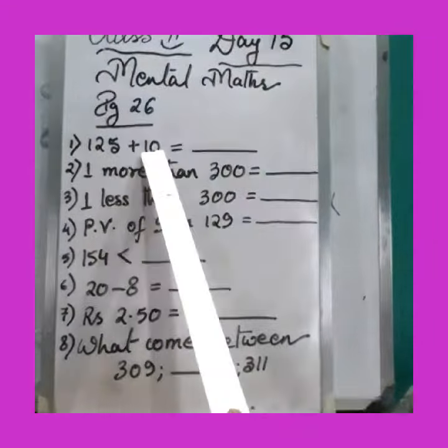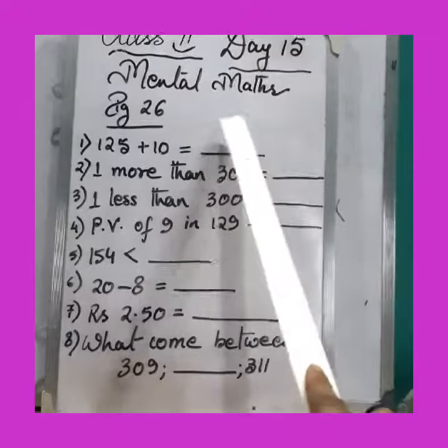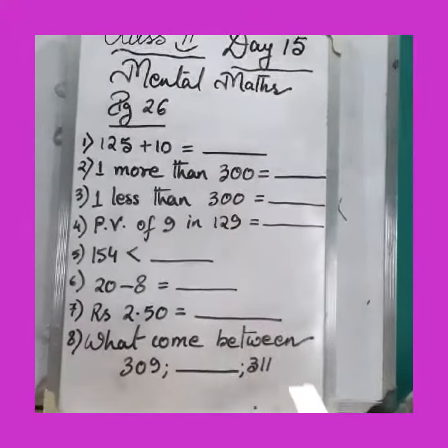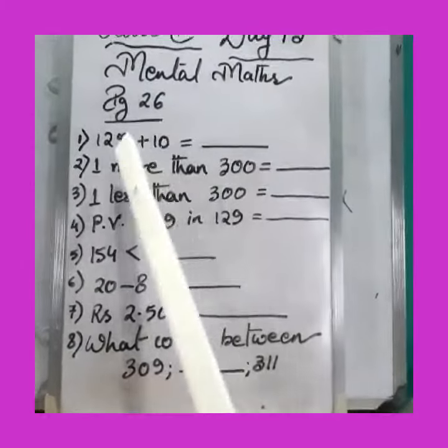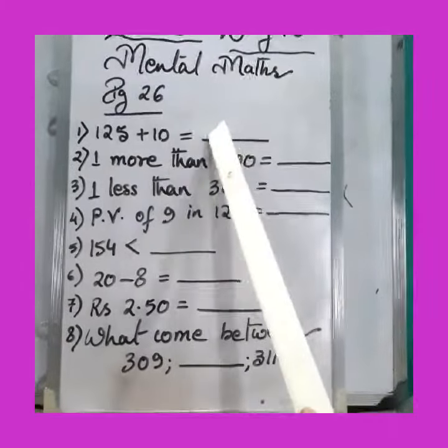125 plus 10 is equal to 135. You can add in the rough or you can add directly. 5 plus 0 is 5, 2 plus 1 is 3, and then 1. So 135.